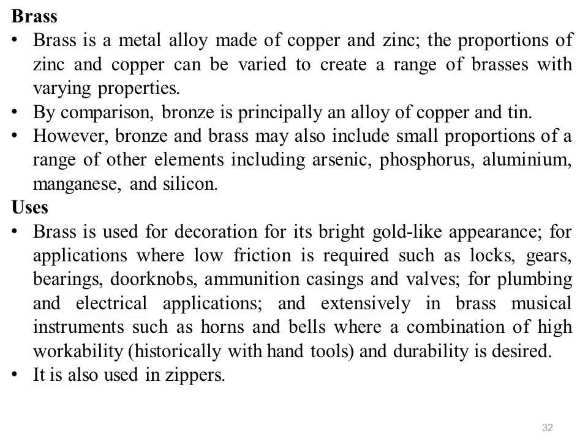What is brass? Brass is a metal alloy made of copper and zinc. The proportion of zinc and copper can be varied to create a range of brasses with varying properties. It is a substitutional alloy — atoms of the two constituents may replace each other within the same crystal structure. By comparison, bronze is principally an alloy of copper and tin. However, bronze and brass may also include small proportions of other elements including arsenic, phosphorus, aluminium, manganese, and silicon.